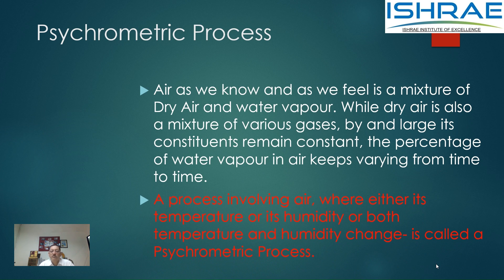A process involving air — which is a mixture of dry air and water vapor — where either its temperature or its humidity, or both temperature and humidity change, is called a psychrometric process. So if you change the temperature it's a psychrometric process. If you change the humidity it's a psychrometric process, and if you change both temperature and humidity, that also is a psychrometric process.